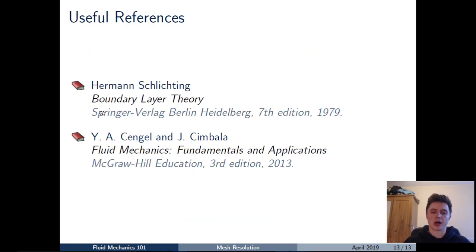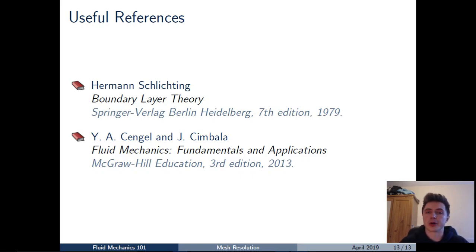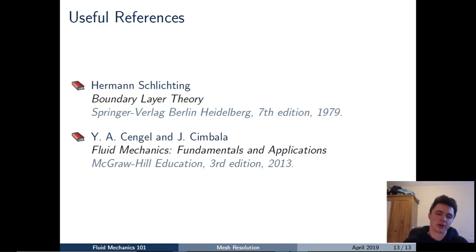For references, the Schlichting book is the source of the empirical formula used here. Any core fluid mechanics textbook — such as the Cengel and Cimbala textbook — will also have a variety of skin friction coefficient formulas for flat plate boundary layers. You can use whichever formula you prefer.